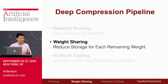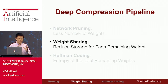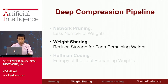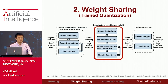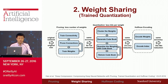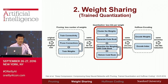Finding the right pruning level is very important. We now use weight sharing to give each remaining parameter even fewer bits, reducing storage for each remaining weight. We first do k-means clustering of the weights to generate a codebook, quantize all weights with that codebook, and finally retrain the codebook to recover lost accuracy.